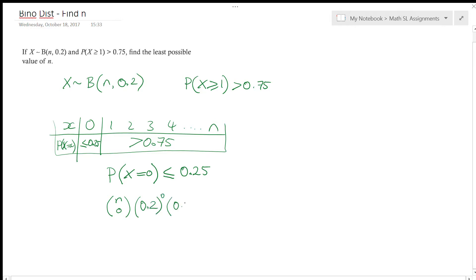And then everything else is a failure. N failures, right? That's an n. Now, and I want this to be less than or equal to 0.25. Now, n choose 0, that's saying how many ways can I choose nothing or no things from n number of things? That's just going to be equal to 1. 0.2 to the power of 0, that's just equal to 1. So I'm left with 0.8 to the power of n needs to be less than or equal to 0.25.